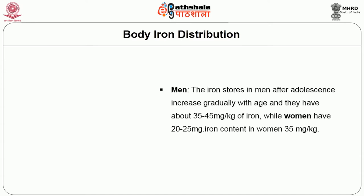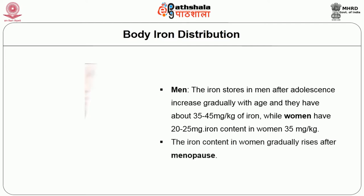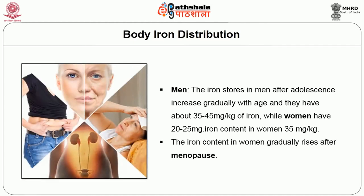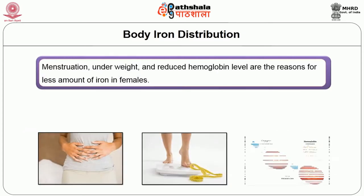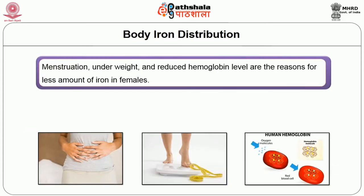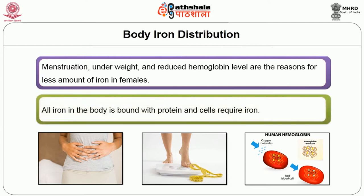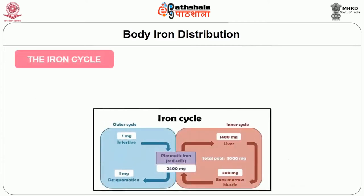In men, iron stores after adolescence increase gradually with age, and they have about 35 to 45 milligram per kg of iron, while women have 20 to 25 milligram of iron. The iron content in women gradually rises after menopause. Menstruation, underweight, and reduced hemoglobin levels are the reasons for less iron in females. All iron in the body is bound with protein, and cells require iron.